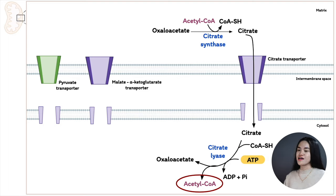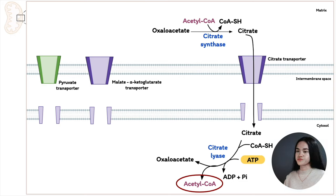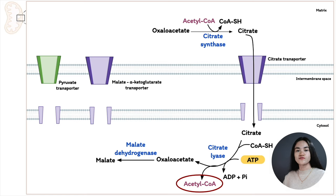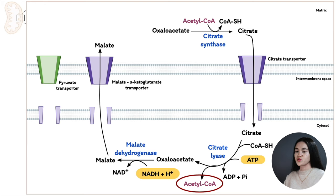Another requirement of fatty acid synthesis is NADPH as the electron donor. The oxaloacetate produced in the cytosol cannot be transported back to the matrix because there is no transporter for it. Instead, oxaloacetate is converted to malate by malate dehydrogenase — NADH is oxidized to NAD+. Malate can then return to the matrix via the malate-alpha-ketoglutarate transporter, where malate dehydrogenase converts it back to oxaloacetate to re-enter the citrate shuttle.